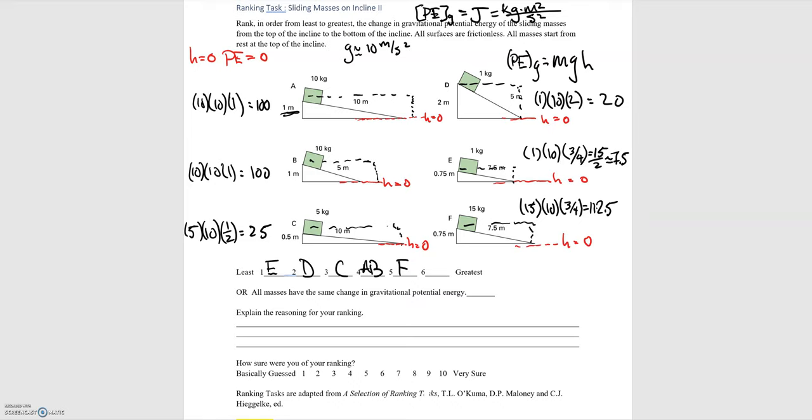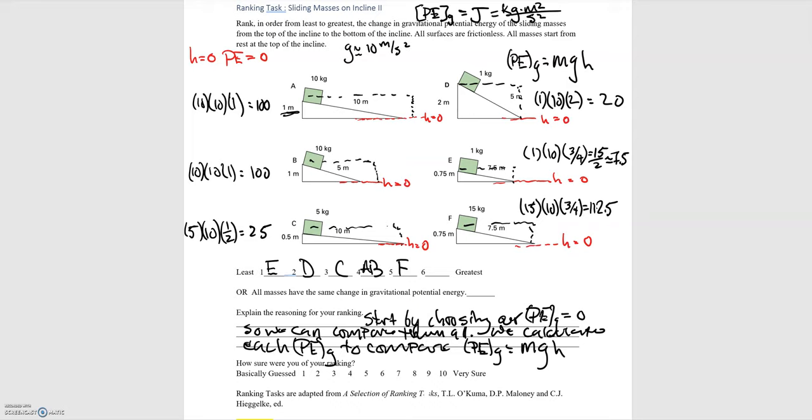Just to wrap up, how did we do this? We started by choosing where our gravitational potential energy is equal to 0 so we can compare them all. Then we calculate each gravitational potential energy to compare, where the gravitational potential energy is equal to m times g, the mass times the acceleration due to gravity times the height, where the height is in reference to our zero point for potential energy.